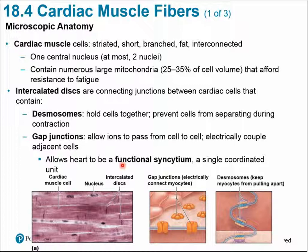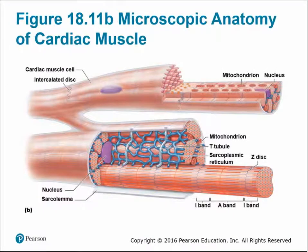Gap junctions in the intercalated discs provide electrical and chemical connections, allowing ions and action potentials to pass from cell to cell very rapidly. This allows the heart to behave as a functional syncytium — a single coordinated unit — so all heart muscle cells contract in unison rather than independently.